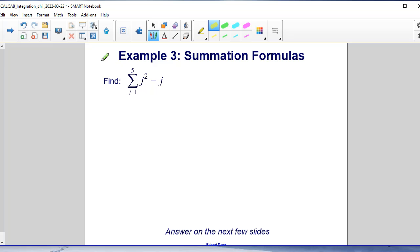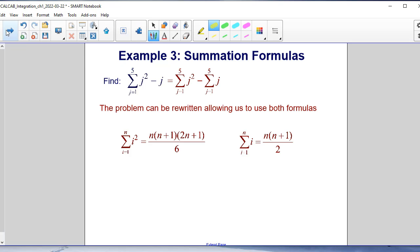Example number 3 of summation formulas: find the sum of j squared minus j as j increments from 1 to 5. So looking at this a little bit closer, we can rewrite this as the sum of j squared minus the sum of j, as both increment from 1 to 5.